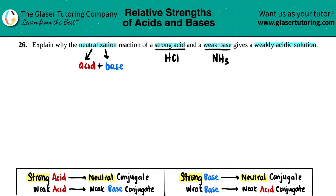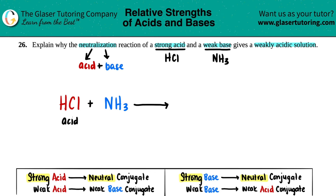So we have these two together: HCl reacting with NH3. There's going to be a reaction — yield sign. Now we just have to talk about it in terms of a Bronsted-Lowry acid and a Bronsted-Lowry base. Here's the acid, here's the base.